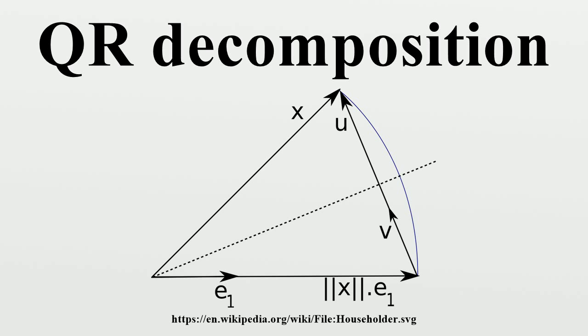If A is invertible, then the factorization is unique if we require that the diagonal elements of R be positive. If instead A is a complex square matrix, then there is a decomposition A equals QR where Q is a unitary matrix.